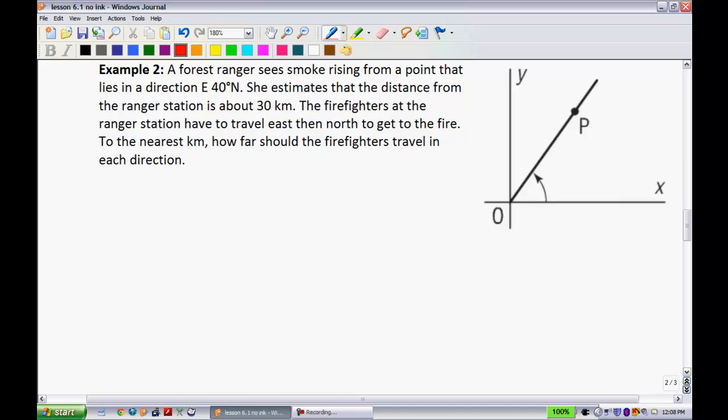Alright, example two, let's try out some of this information. A forest ranger sees smoke rising from a point that lies in the direction east 40 degrees north. She estimates that the distance from the ranger station is about 30 kilometers. The firefighters at the ranger station have to travel east and then north to get to the fire. To the nearest kilometer, wonder how far should the firefighters travel in each direction. Alright, so here's a scenario that we kind of have, right? Let's maybe draw ourselves a little bit of a picture here. So this is where the smoke's coming from, that region right there. And what else do we know? We know that the distance from the ranger station, so from P to O right here, normally called our R, we'll write that this is 30 kilometers. We know that we have gone east and then they want to go 40 degrees north, so that this angle right here is 40 degrees. Like so. Alright. So what we want to figure out, right, is how far do they have to go in this horizontal direction and how far do they have to go in this vertical direction right there. So essentially, I'm looking for both of those. I'll add them up and I will call her a day.